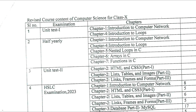For the half-yearly examination, the chapters are Chapter 1: Introduction to Computer Network, Chapter 4: Introduction to Loops, Chapter 5: Nested Loops in C, Chapter 6: Arrays in C, and Chapter 7: Functions in C — so these 5 chapters are coming. For practical, you will need Loops, Nested Loops, Arrays, and Functions in C.